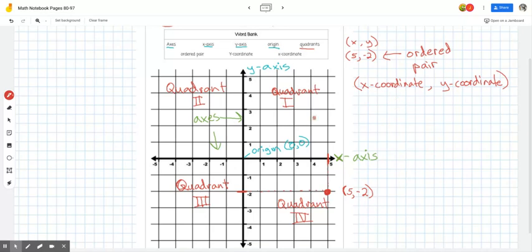So in this example, we have (5, -2). That's our x-coordinate and our y-coordinate. So this is the entire word bank complete. All the words are labeled below.